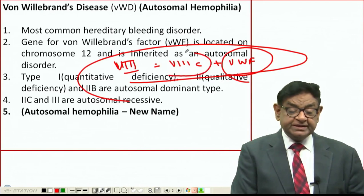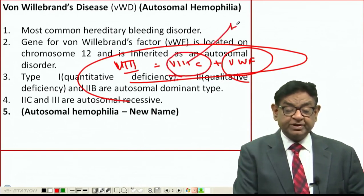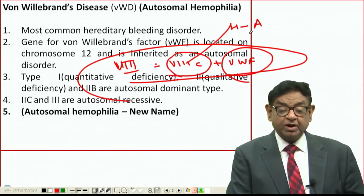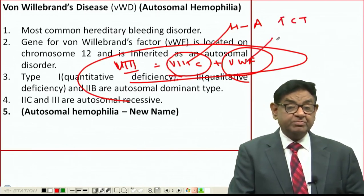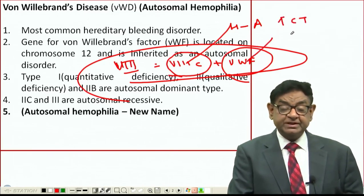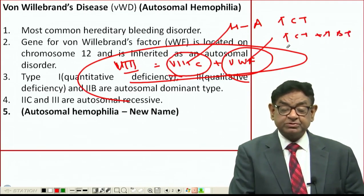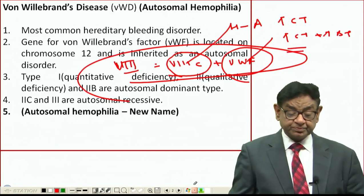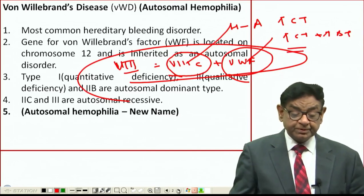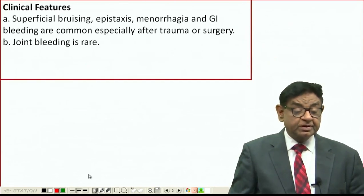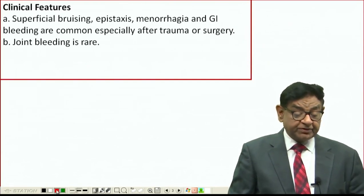When Factor 8C is deficient — as occurs in Haemophilia A — that leads to prolonged clotting time. But when there is deficiency of von Willebrand factor, there is increased clotting time plus increased bleeding time also.